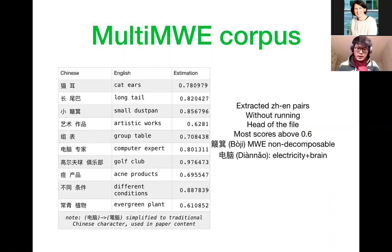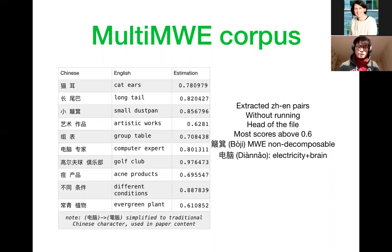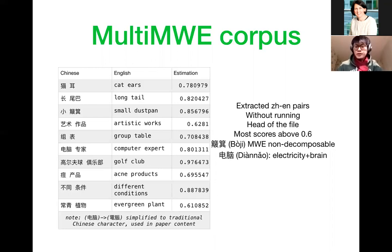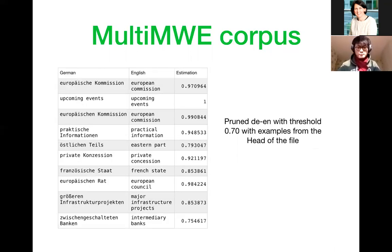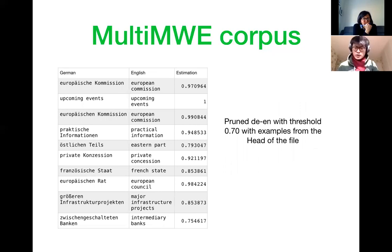Here are some extraction examples for Chinese. One example means 'dustpan' — if you split it into two characters independently, they don't mean anything, but together they mean this household item, so we need to treat them together. Another easy example: 'diannao' means 'computer' in Chinese — 'dian' means electricity and 'nao' means brain, so in China, when computers arrived, people thought of it as an electronic brain. These MWEs are very language-specific. We also show some German-English examples filtered with a threshold of 0.7.